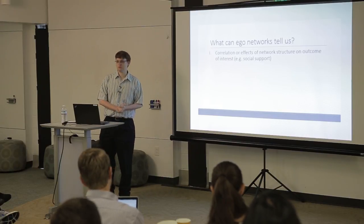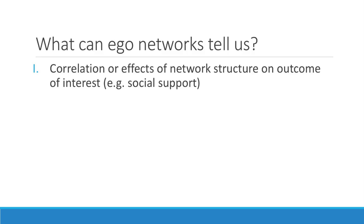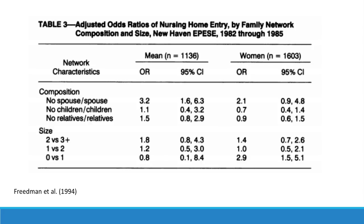What can ego networks tell us? They can tell you about the correlation or effects of network structure on an outcome of interest. One example is social support: this table studied the probability of someone entering a nursing home based on the number of children they have — a simple degree count. Unsurprisingly, they found that people are much less likely to go to a nursing home if they had lots of kids.